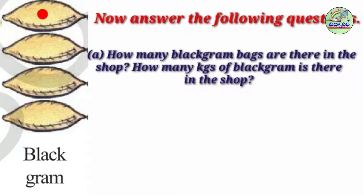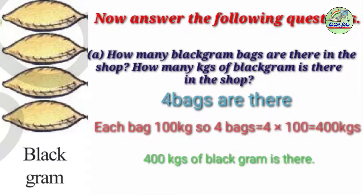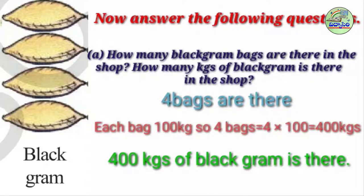First, we have to count the bags: 1, 2, 3, 4 — 4 bags are there. Each bag contains 100 kgs, means 4 bags, so 400 kgs. 400 kgs of black gram is there.